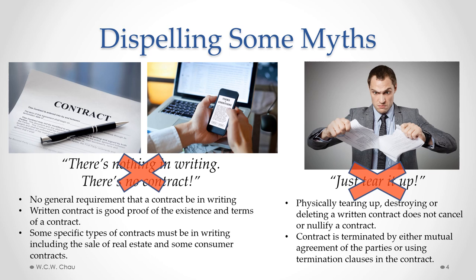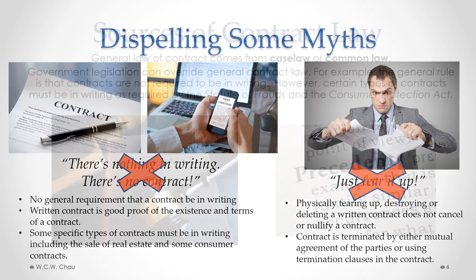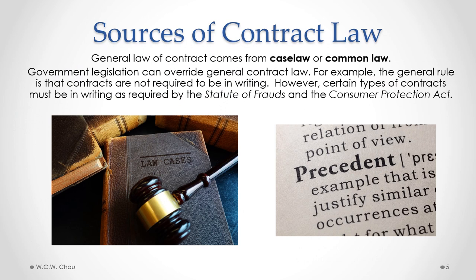But just the physical tearing up of a contract does not eliminate the legal existence of a contract. Where does contract law come from, or what are the sources of contract law? Most of contract law comes from case law, or what we also refer to as common law. These are legal court decisions from which we extract various legal principles that have become the law of contract. That's where most of contract law comes from, which is common law.